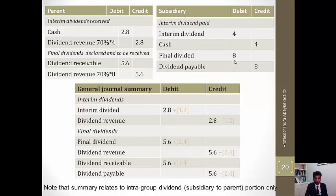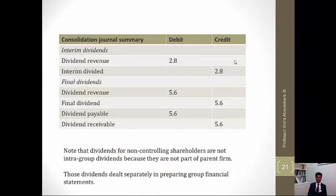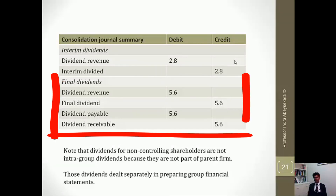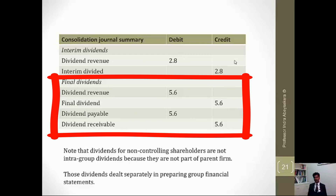Our elimination entry is: debit dividend revenue $2.8 million and credit interim dividend $2.8 million for the interim dividends. For the final dividend, we debit dividend revenue $5.6 million and credit final dividend $5.6 million. There is also payable and receivable: we debit the payable $5.6 million and credit receivable $5.6 million.